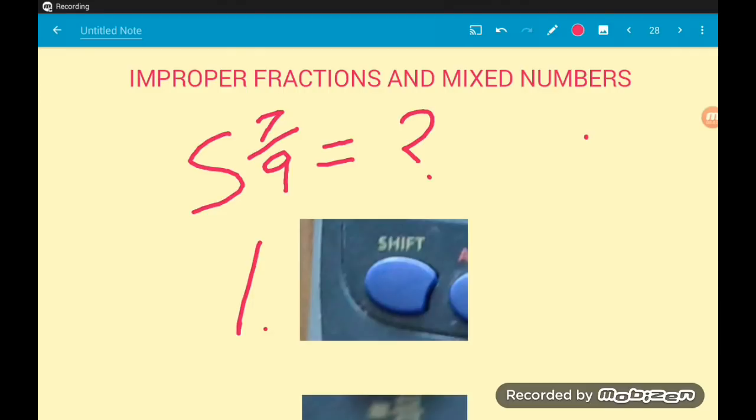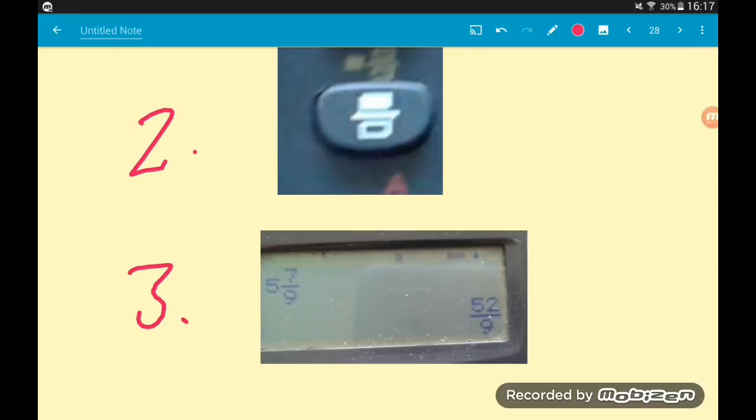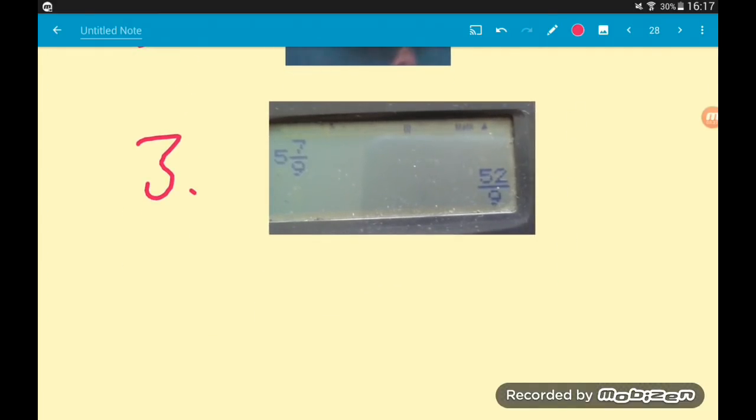To turn the mixed number into an improper fraction, for example five and seven ninths: first press shift, then press your fraction button, and you will get three little boxes for a mixed number. Put your numbers in each box, press equals, and it will give you your answer as an improper fraction.